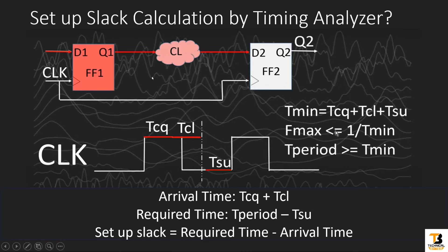For simplicity, we are showing only TCQ and combination delay. But in the actual timing analysis report, you will see net delays also — for example, the net delay from flip-flop to combination logic will be included, and the delay from combination logic to the flip-flop will also be included in the arrival time.